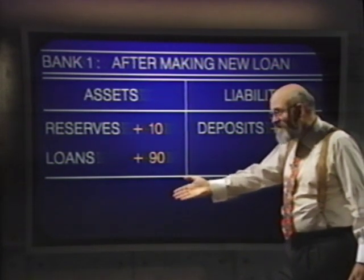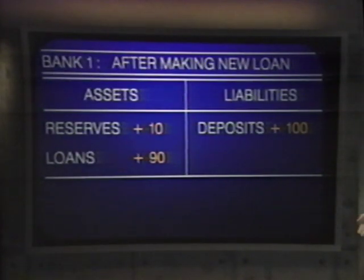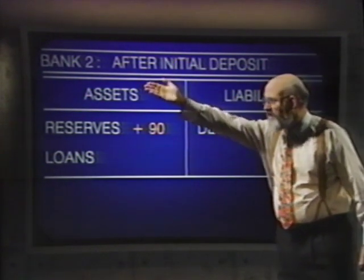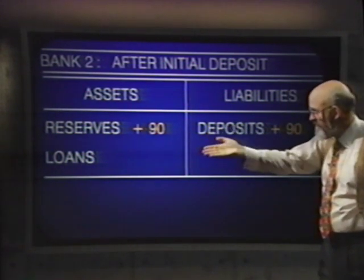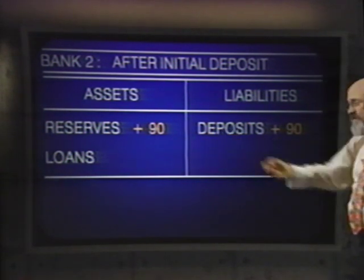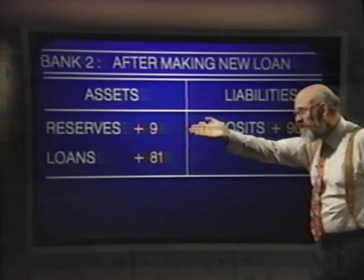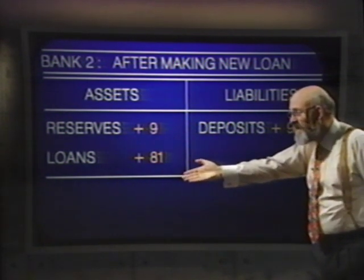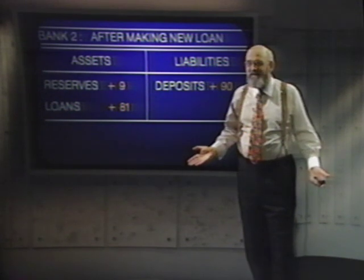The borrower spends the $90 — say, on flowers — and the florist deposits it in bank number two. Bank number two won't want to leave all $90 as non-interest-earning reserves either. Using the 10% ratio, it pulls extra reserves down to $9 and makes loans of $81. That $81 gets spent and someone deposits it in yet another bank. It's a multiplicative process: the total quantity of bank deposits created is a multiple of the new currency introduced.